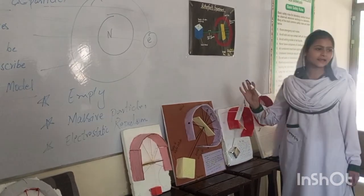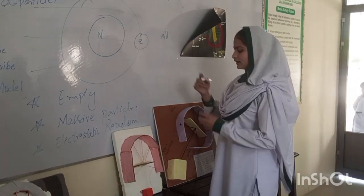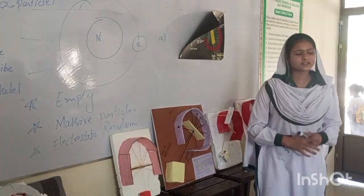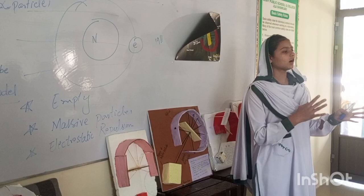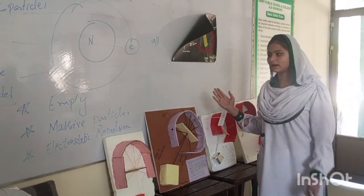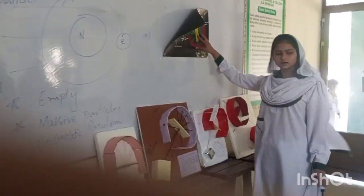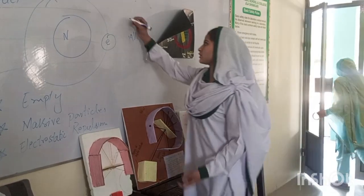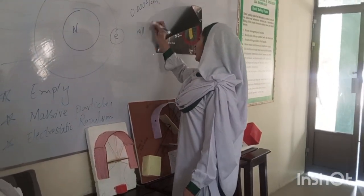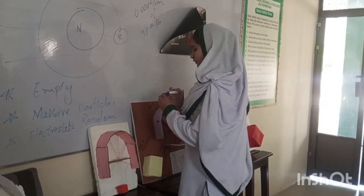In 1911, Rutherford performed an experiment in order to determine the arrangement of electrons in an atom. He bombarded a very thin gold foil, about 0.0004 centimeters thick, with alpha particles.